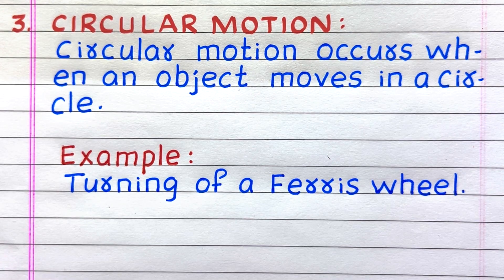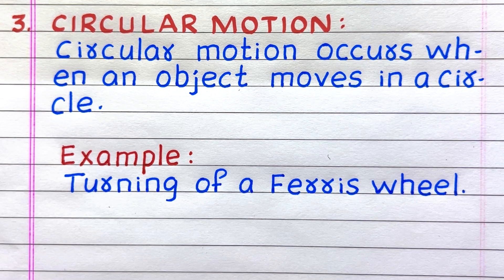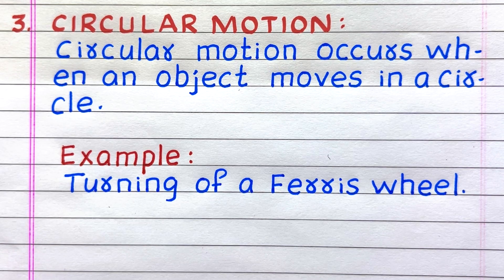Third type of motion is circular motion. Circular motion occurs when an object moves in a circle. Example: turning of a ferris wheel.